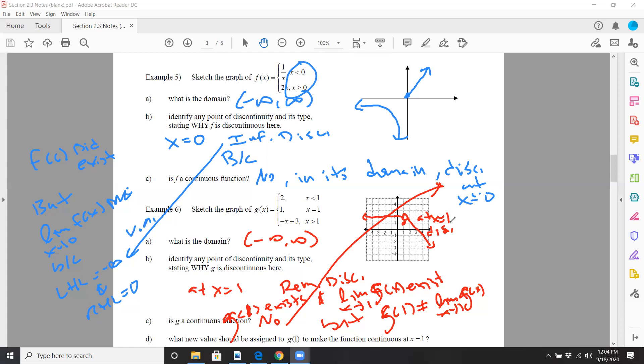What should we assign the g of one to make it continuous? Well obviously I need to plug in the hole. We should have made g of one equal to two, so that we make it a continuous function.